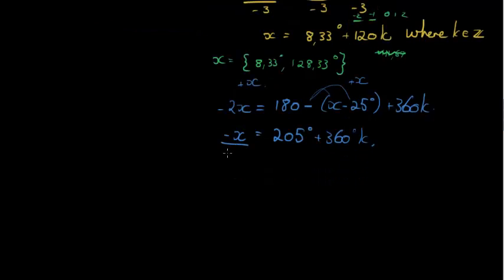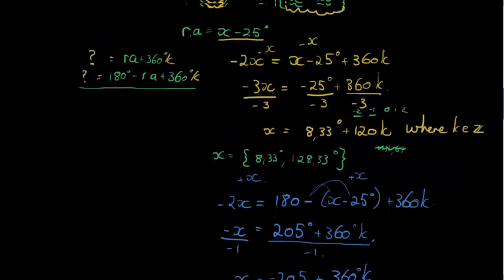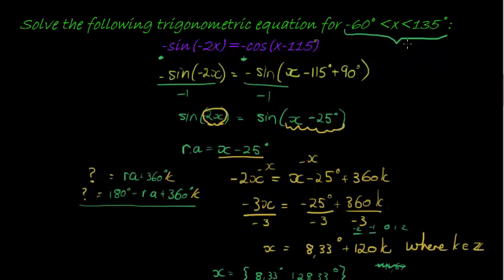And now if I divide both sides with negative 1, I get x is equal to negative 205 minus 360 times k. But again, k is just the placeholder, so let's keep it a positive. So now we have to find values on this interval.